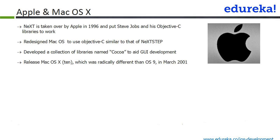In 1996, NeXT was taken over by Apple and Steve Jobs again became the CEO of Apple. They put him and his Objective-C libraries to work, which resulted in redesigning the complete Mac OS to use Objective-C similar to that of NeXTSTEP. During this course they developed a collection of libraries named Cocoa, to aid GUI development primarily. Mac OS X was radically different from previous versions and was released in March 2001 — earlier called Rhapsody, primarily for Apple's main market of creative professionals and home users.